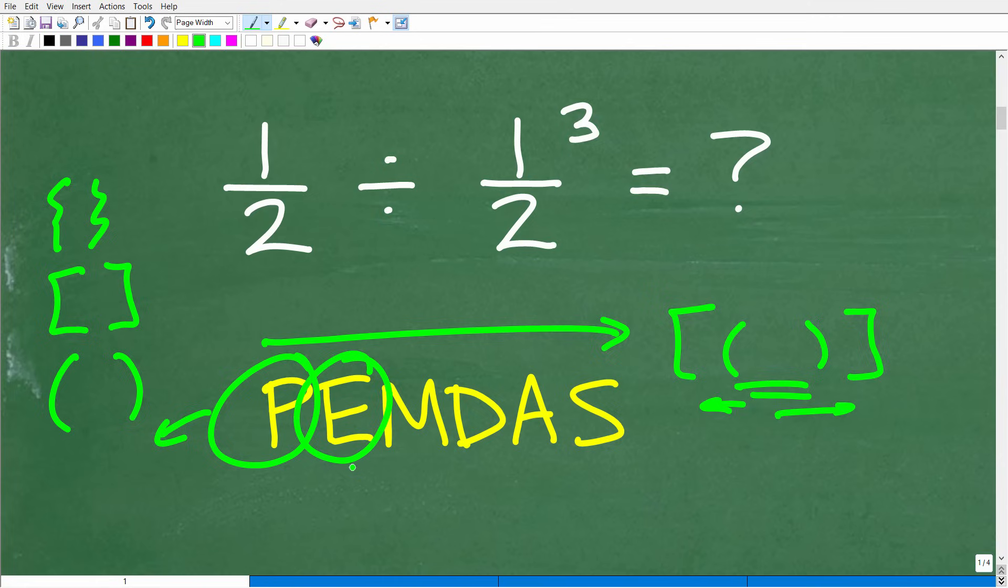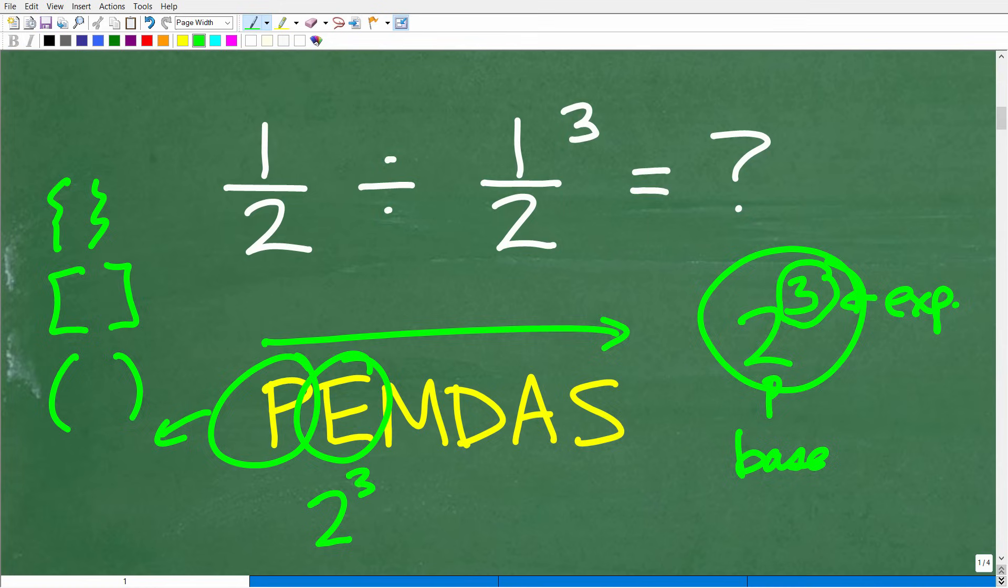All right, so E stands for powers. Now, you might be saying, well, E, this should be P if it stands for powers. Well, let's take, for example, 2 to the third power. Okay, this little number up here in the top right is called the exponent. This big number down here is called the base. The entire thing is referred to as a power. So, E really stands for exponents. But you can think of this as powers.